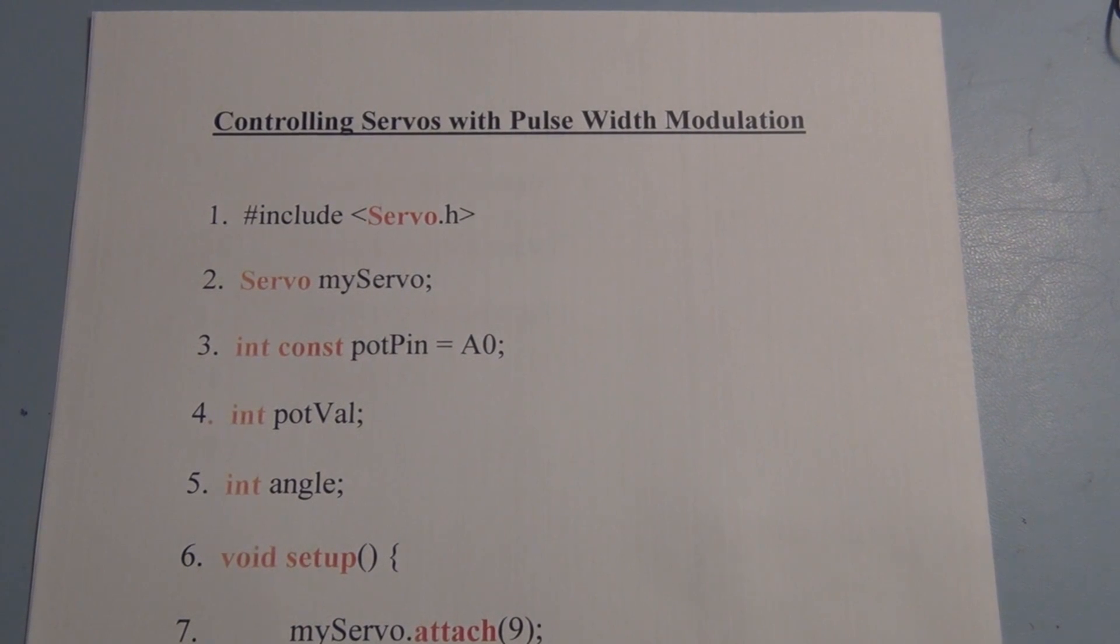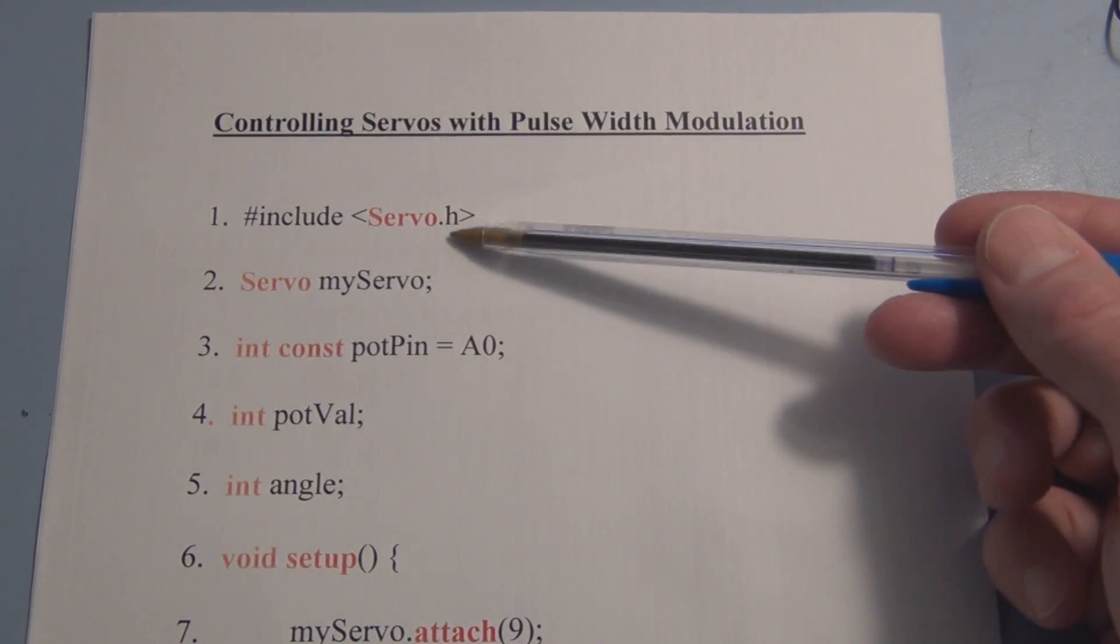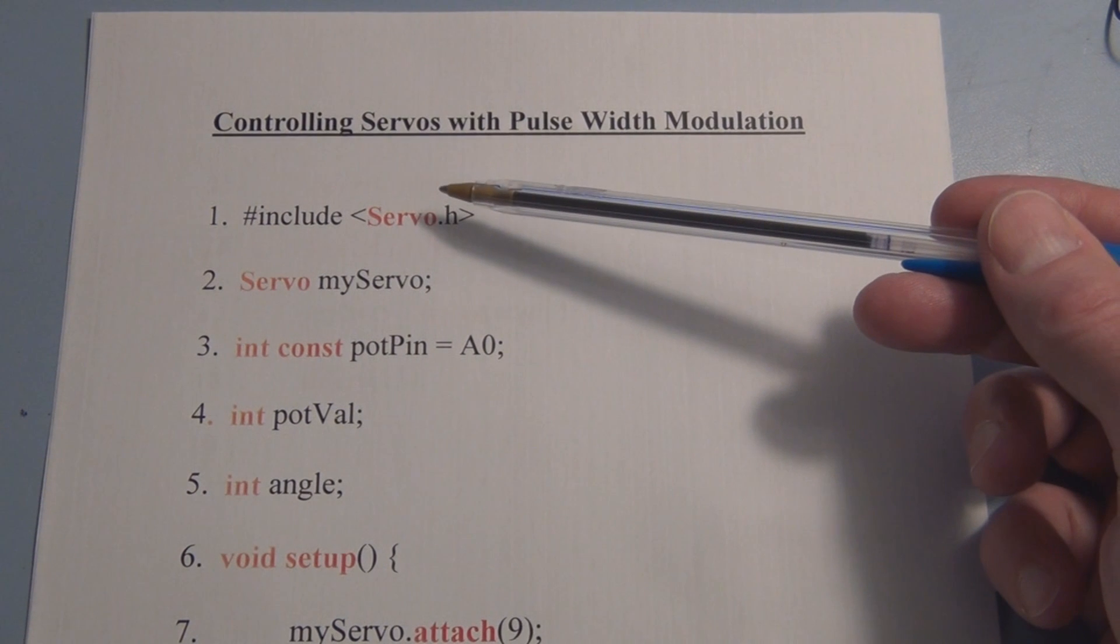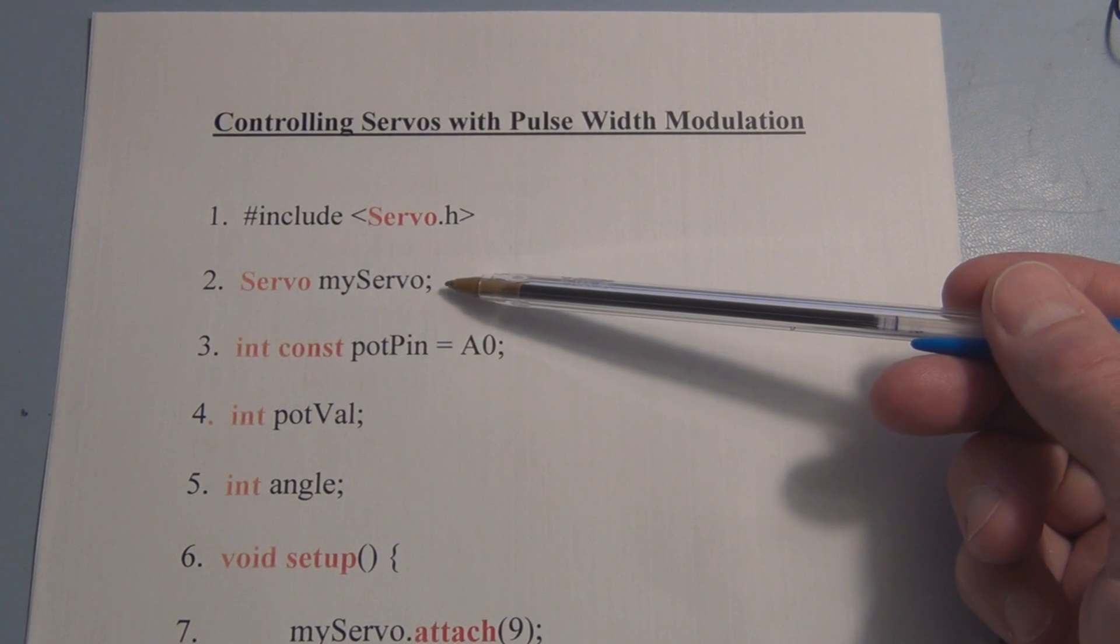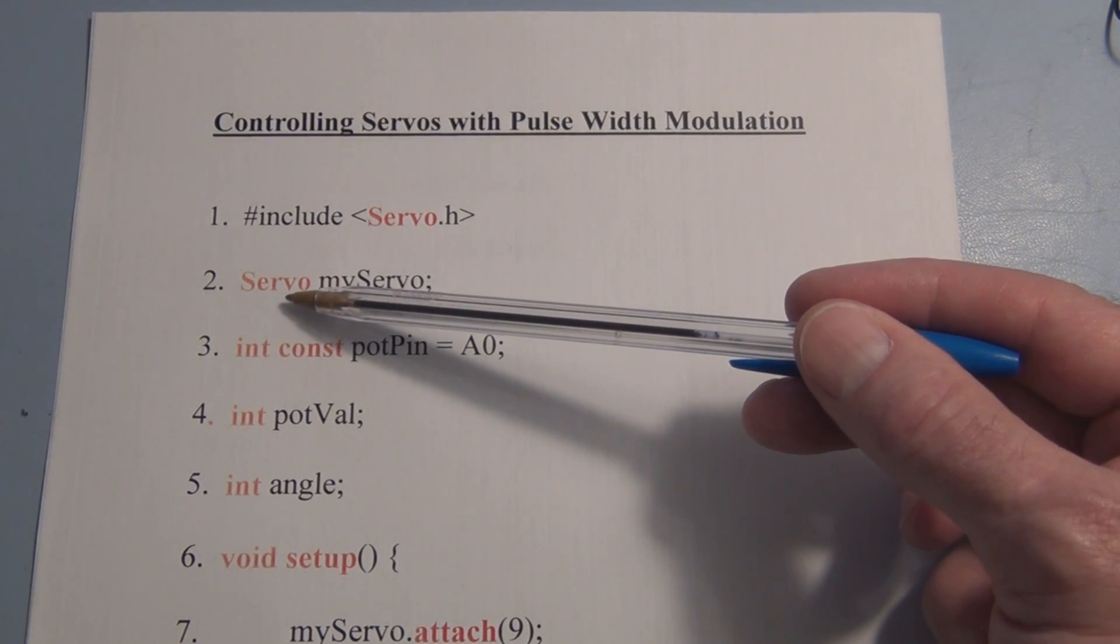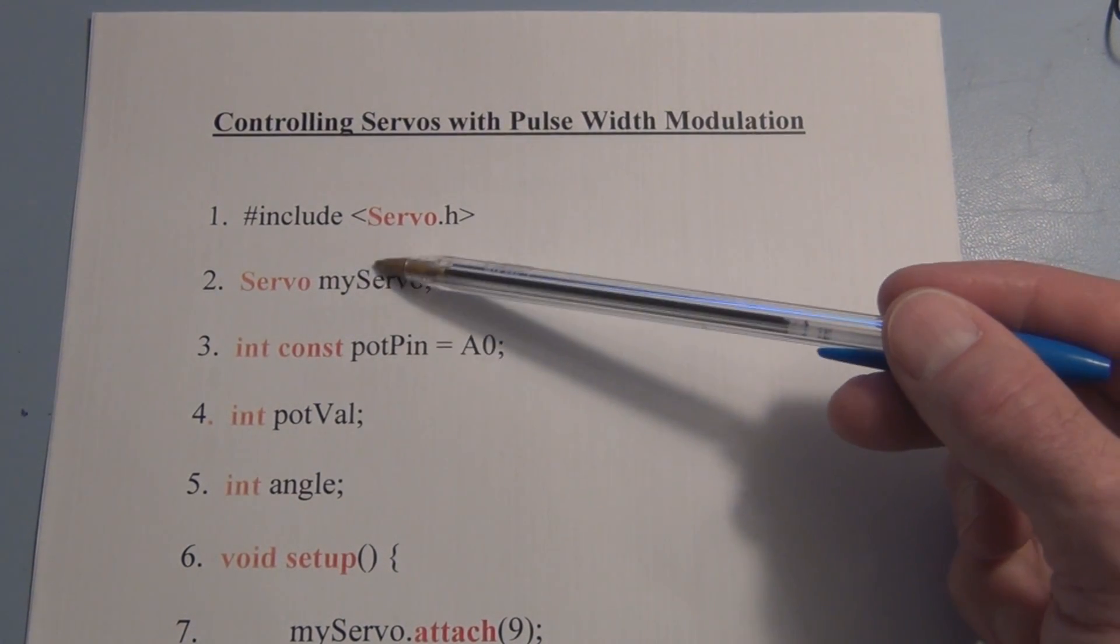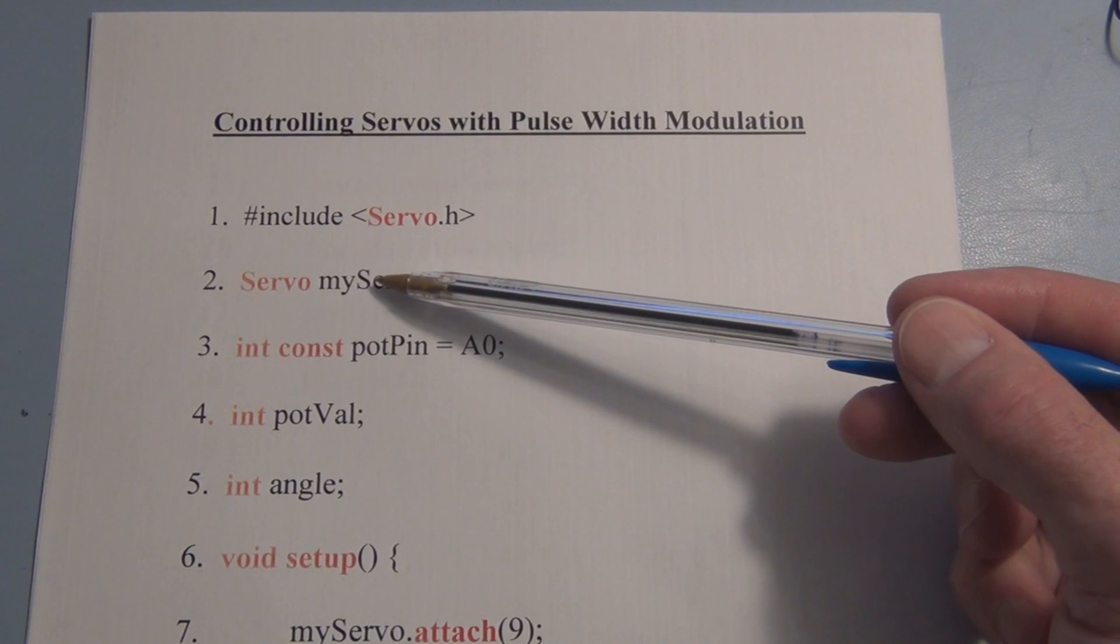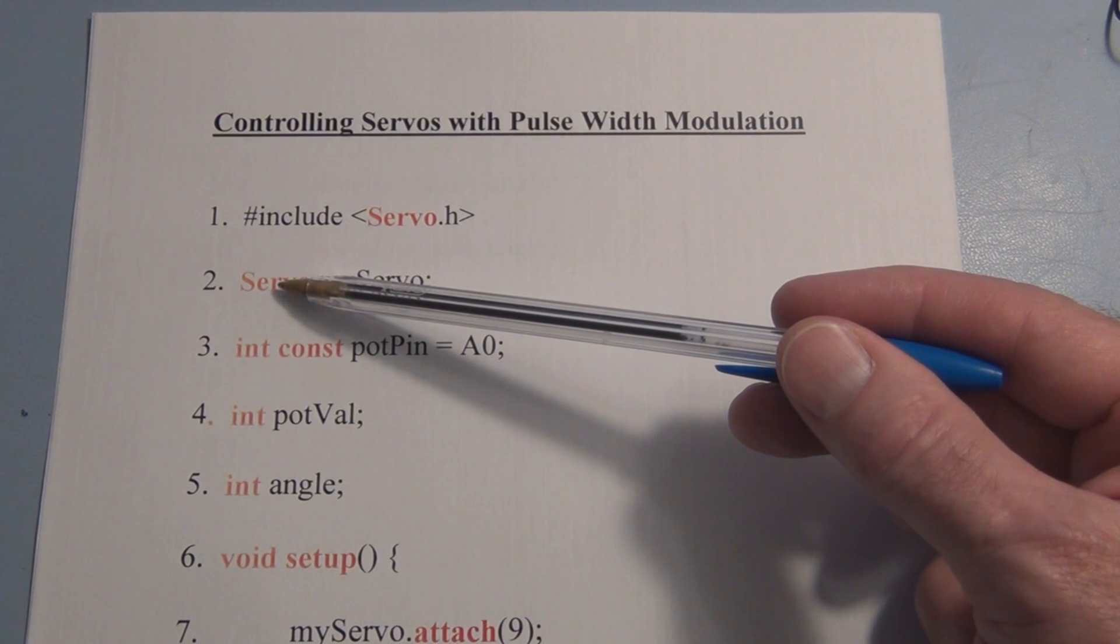So it's a pretty short program and the reason it's able to do so much is that we're using or accessing a servo library. So here we have the include statement Servo.h and this is importing the servo library. Here's where we create the myServo object. So we have Servo which is referring to the servo library, myServo. So here we're associating myServo with all the resources found in the servo library that we imported.